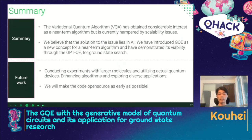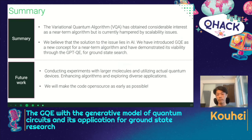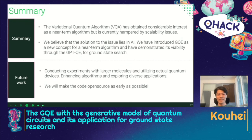This is a summary of today's talk. The variational quantum algorithm VQA has obtained considerable interest as a near-term algorithm in this decade, but it is currently hampered by scalability issues. We believe that the solution to the issue lies in AI. We have introduced GQE as a new concept for a near-term algorithm and have demonstrated its viability through the GPTQE ground state search. Future work includes conducting experiments with large molecules and utilizing actual quantum devices, as well as enhancing the algorithm and exploring diverse applications as in VQA. We will also make the code open source as early as possible, so I want you all to join this exciting field. Thank you for listening.